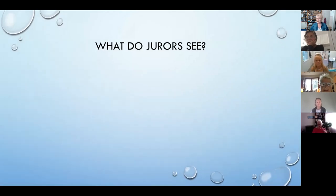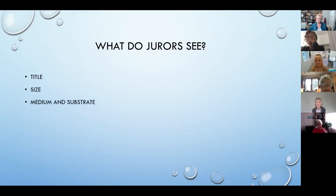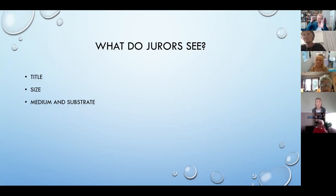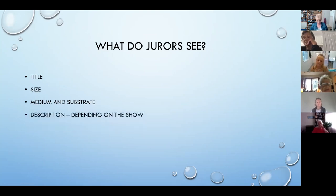What do the jurors actually see? They see the title of the painting — it always helps to have a good title. They see the size, medium, and substrate. Sometimes you look at something and go 'that's quite interesting,' and then look at the size and reconsider. So the size and medium give them some idea of the visual impact of a piece. Then depending on the show, they may see the description — the show organizers can choose whether jurors will see the description or not. Most shows at this point are still not displaying the description to jurors.